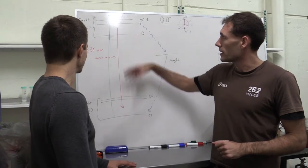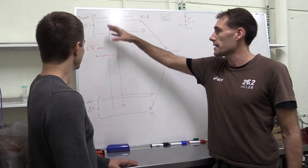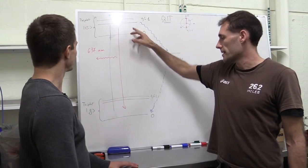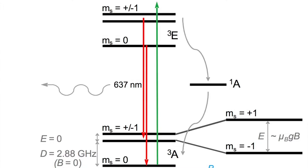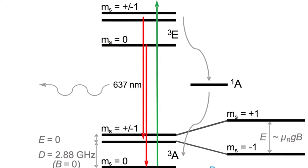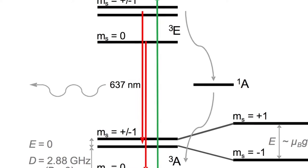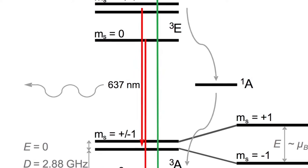If you look at the level structure, you have a ground state and you have an excited state and they're both triplet and both the ground state and the excited state show a spin, a different spin. And so you can manipulate the spin just by applying a microwave field.